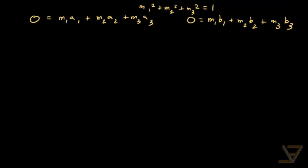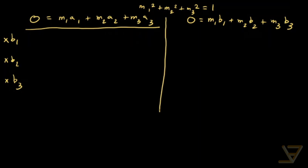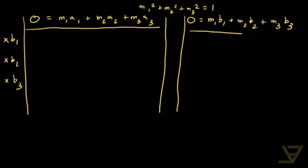What we're going to do is multiply the first equation by B1, by B2, and by B3. The reason we're doing this is that we don't want to do division and isolation, because we don't know what's zero and what's not zero. So we're just going to do multiplication and elimination. And for the second equation, we're going to multiply it by A1, by A2, and by A3. Let's see what we get.